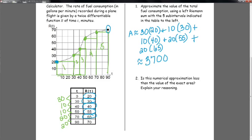Our situation talks about an airplane flying. We're talking about fuel consumption. Our fuel consumption is in terms of gallons. So over 90 minutes, my airplane has used up 3,700 gallons of fuel.